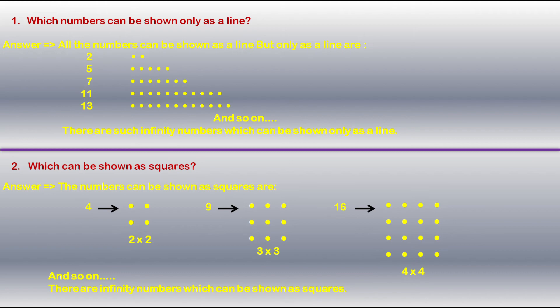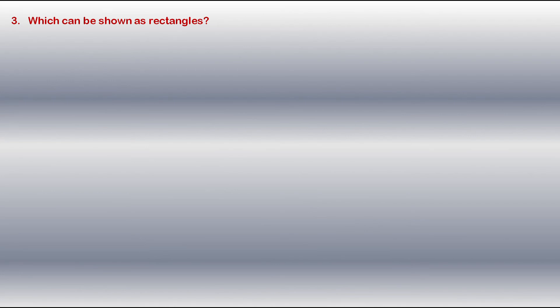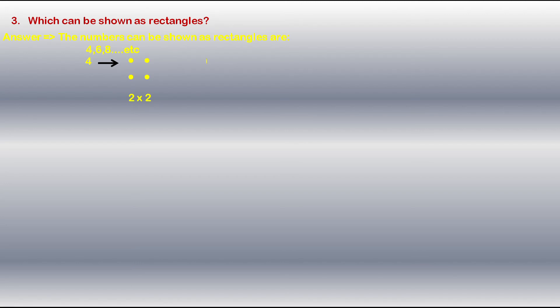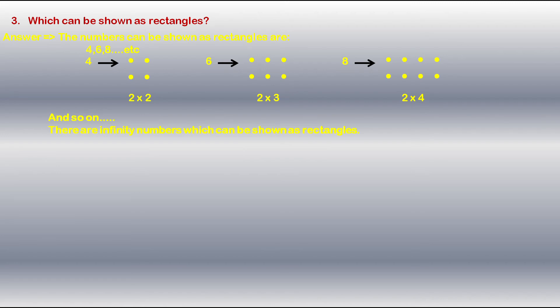The third question is: Which numbers can be shown as rectangles? The answer is the numbers that can be shown as rectangles are 4, 6, 8, and so on. For example, 4 can be arranged as 2×2, 6 can be arranged as 2×3, and 8 can be arranged as 2×4. There are infinitely many numbers which can be shown as rectangles.